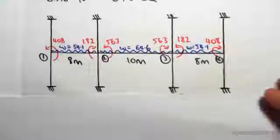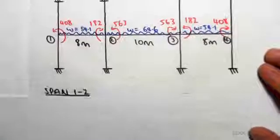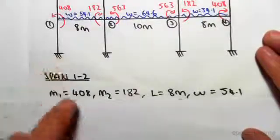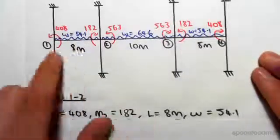Just like before, we're going to find key points along our beams using the bending moment equation. So for span one to two, we have M1 is 408, M2 is 182, the length is 8 meters, and the UDL is 54.1 kilonewtons per meter.